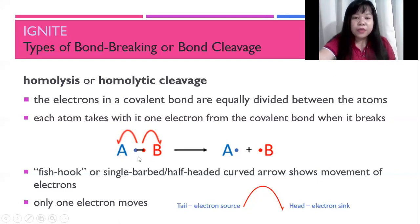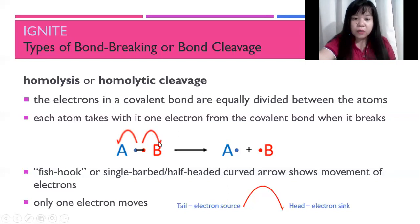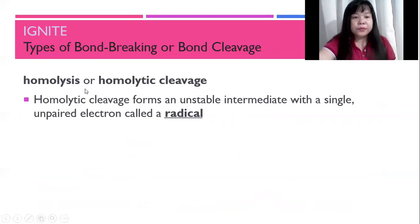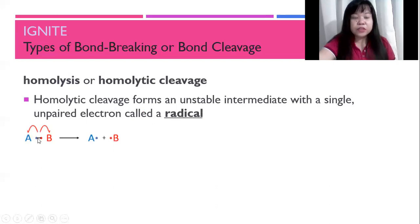Notice that these arrows are drawn on a single structure, specifically on the reactant side. We draw the arrow coming from the electron going towards where it's supposed to travel, and not from the product side. These would be drawn on the same side of the reaction. Homolytic cleavage forms an unstable intermediate with a single unpaired electron called a radical. Notice that homolytic cleavage or homolysis produces two radicals.